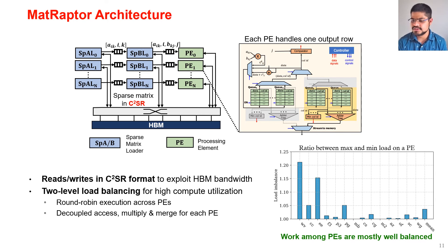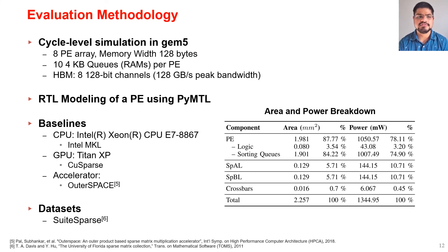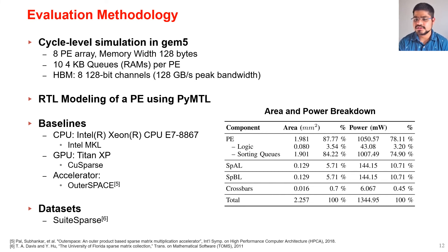Load imbalance is less than 5% for almost all benchmarks, and several benchmarks are nearly perfectly work-balanced. For evaluation, we performed cycle-level simulation in gem5 with an 8-PE array and a memory width of 128 bytes, using 10 four-kilobyte queues and HBM with 108 Gbps of peak bandwidth. We modeled a single PE in RTL using PyMTL. Our baselines were Intel MKL on CPU, cuSPARSE on GPU, and OuterSPACE as an accelerator baseline. Area and power are mostly consumed by the queues and SRAMs, which is expected since sparse-sparse MM is a highly memory-bound application.